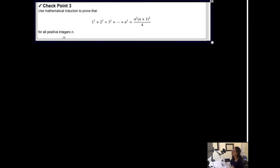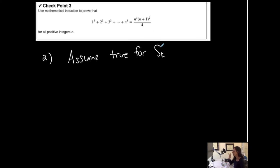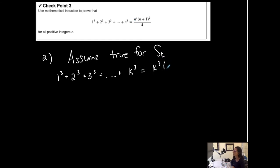Step 2: Assume true when n is equal to k. So on the left, I want the sum of the first k terms: the first term is 1 to the third, the second term is 2 to the third, the third term is 3 to the third, plus the kth term. And I assume that that is equal to the right-hand side when n is k.